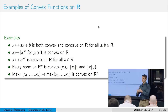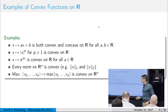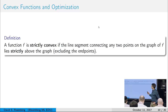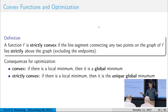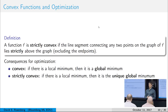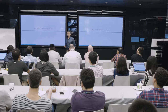Strict convexity is a good term to know. If the line segment connecting any two points lies strictly above the function, it's strictly convex — so a linear function is not strictly convex but it is convex. The consequences for optimization are: if you have a convex function, any local minimum is also a global minimum. If it's strictly convex, the global minimum is unique — so any local minimum is the unique global minimum.